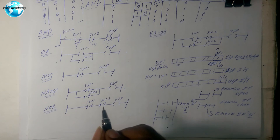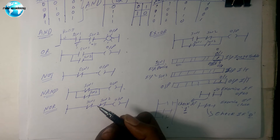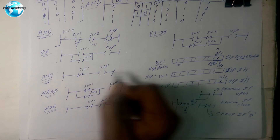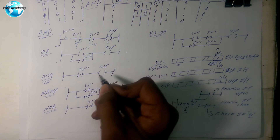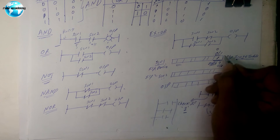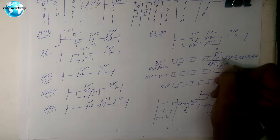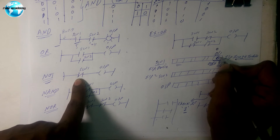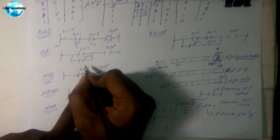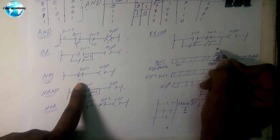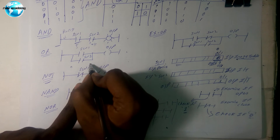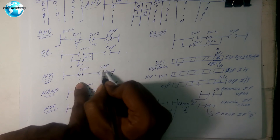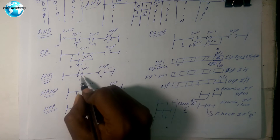This is a simple way of explaining how ladder logic works. Now let me show the NOT gate. Assume switch one is not pressed — that means the value is zero. The NOT gate contact checks for zero, so when the input is zero it gives a true output. That is what a NOT gate does: when input is zero, output is one. The rung becomes true and the output glows.